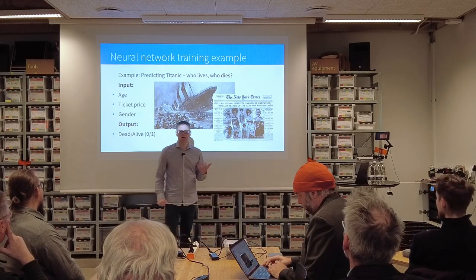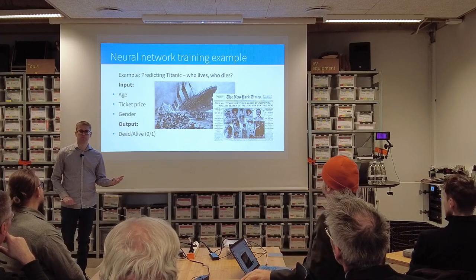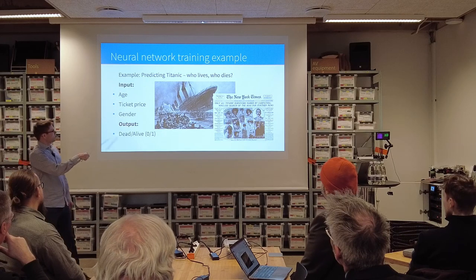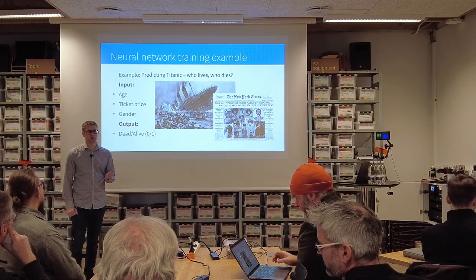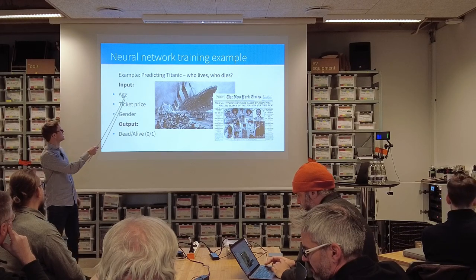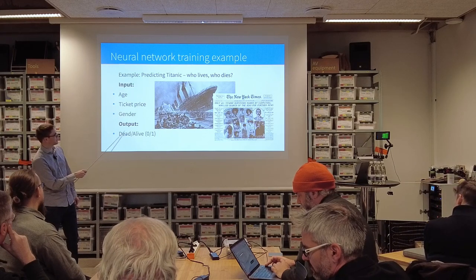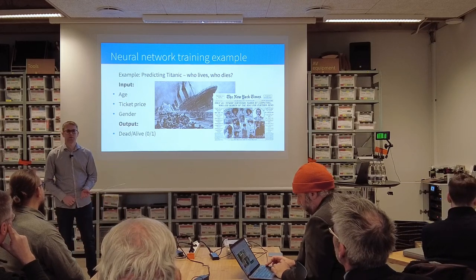I'll try to explain neural networks with a simple example — kind of a beginner's example in machine learning: the Titanic passenger list. We'll get a part of the passenger list, narrowed down to age, ticket price, and gender. We'll also know whether these people are dead or alive at the end. We'll use this to train our neural network — about 900 people on that list. Afterwards, there will be another list with 500 people where we get only the input data, and the neural network will have to predict whether they lived or died. Then we can test how well it actually worked.